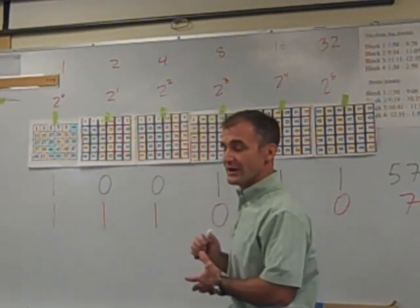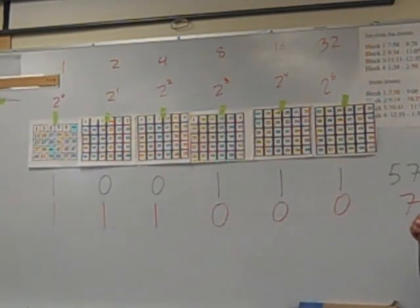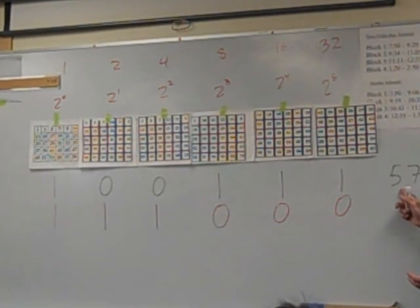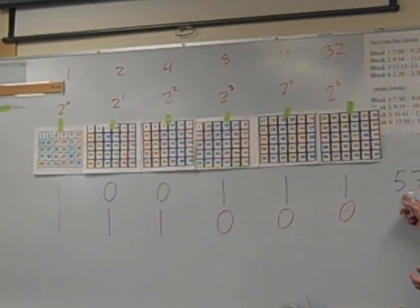Everybody kind of get that? It's a binary number system. It's a base 2 number system versus a base 10 number system. Can you understand why that's important?